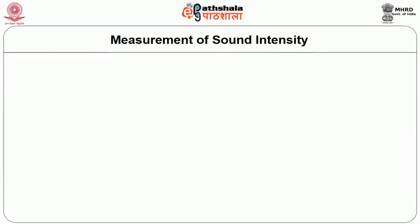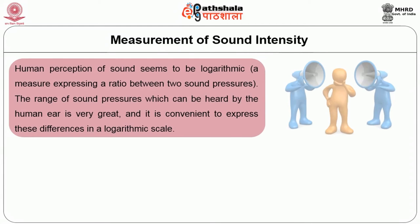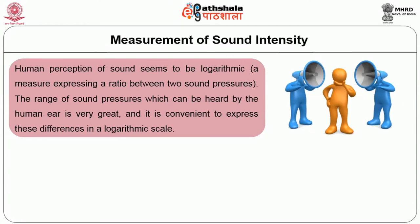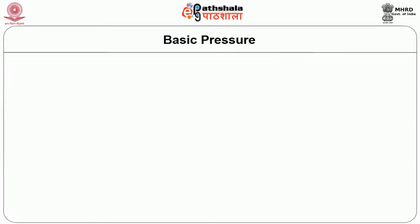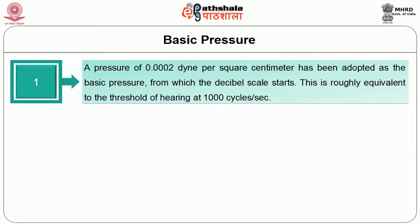To understand the underlying aspects, we should know how sound is measured. Human perception of sound seems to be logarithmic — a measure expressing a ratio between two sound pressures. The range of sound pressures heard by the human ear is very great, so it is convenient to express these differences on a logarithmic scale. The unit normally used is the bel, which is a logarithm of a ratio of 10. The most common measure is the decibel, where the bel is divided into 10 parts, so a decibel equals one-tenth of a bel. A pressure of 0.0002 dynes per square centimeter is the basic pressure from which the decibel scale starts, roughly equivalent to the threshold of hearing at 1000 cycles per second.